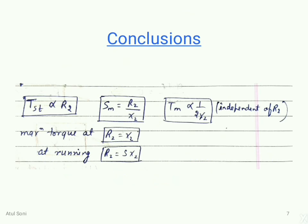Key conclusions: the maximum torque is inversely proportional to standstill reactance. Varying rotor resistance does not affect the value of maximum torque — the maximum torque is independent of resistance. The standstill reactance of the rotor should be low for maximum torque. Rotor resistance only varies the slip (or speed) at which maximum torque occurs. If R2 = X2, the maximum torque occurs at slip = 1, meaning maximum torque occurs at the starting position.